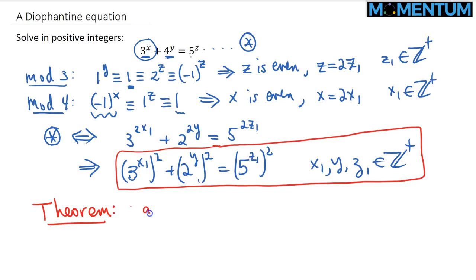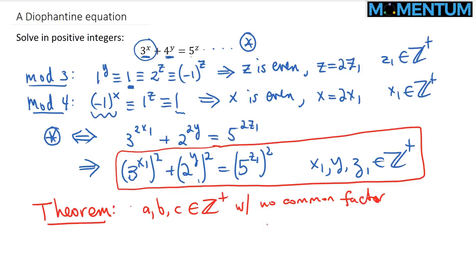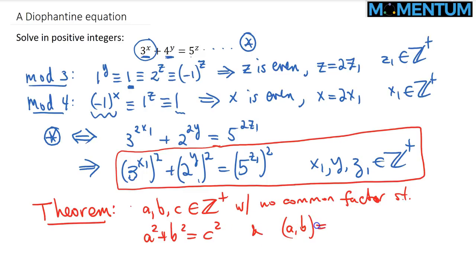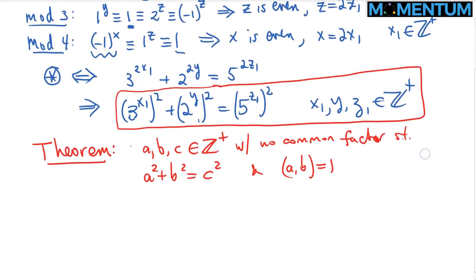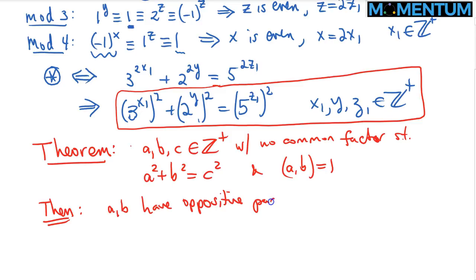The theorem states: if A, B, C are positive integers with no common factor such that A² + B² = C² and A, B are relatively prime, then A and B have opposite parity — one is odd and one is even. Without loss of generality, we take A to be odd and B to be even.